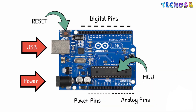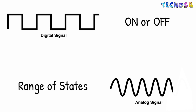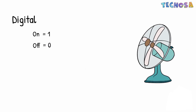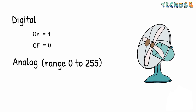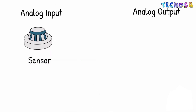We have 14 digital pins, 6 analog pins, and power pins with 5 volts and ground. A digital signal has only two states — it can be on or off. An analog signal has a range of states. For example, controlling a fan digitally means it can only be turned on or off. With analog control, we have a range of values from 0 to 255, where 0 is off, 255 is full speed, and 127 is half speed.